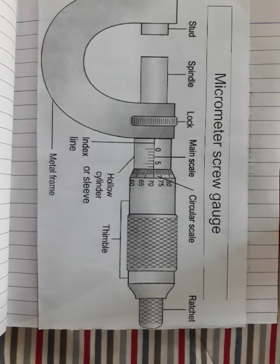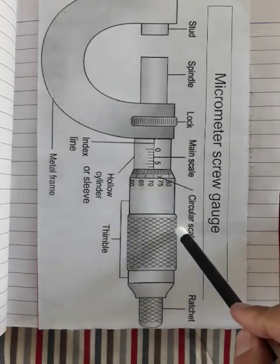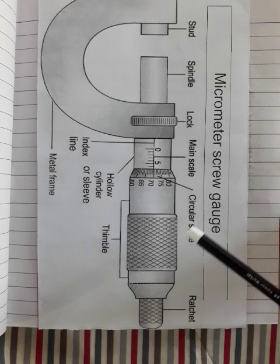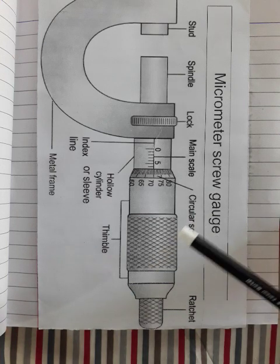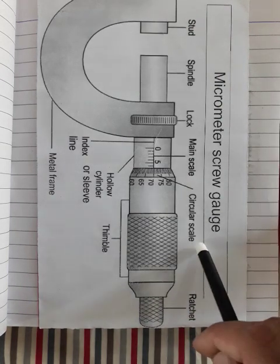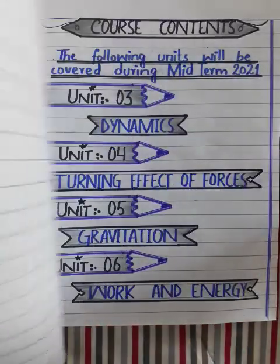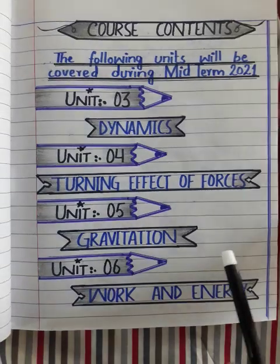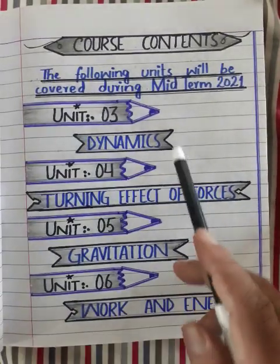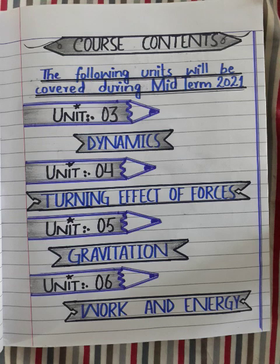You will make a neat, handmade diagram — for example, a screw gauge from Chapter 1, or a Vernier caliper, or a physical balance, or any physics-related diagram. You must draw one physics diagram on this second page. Then on the next page, leave it complete as shown. After that comes the course contents page — the heading is 'COURSE CONTENTS'.